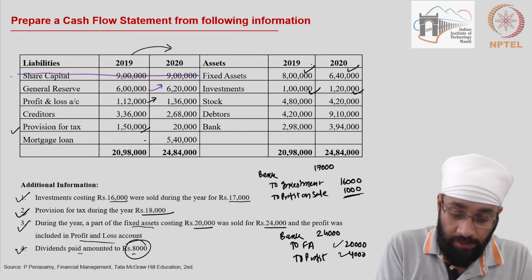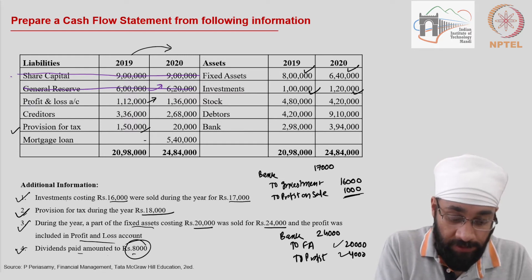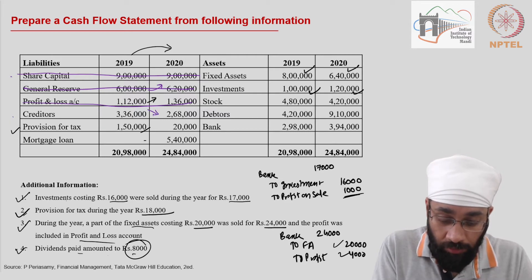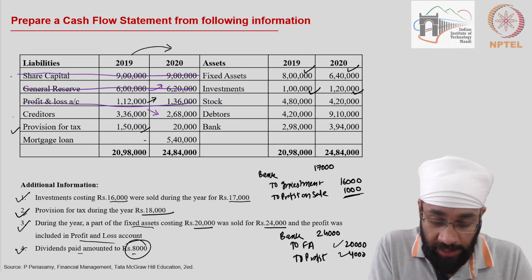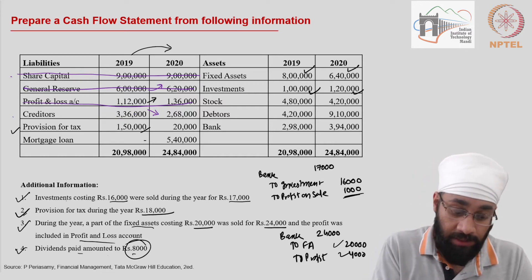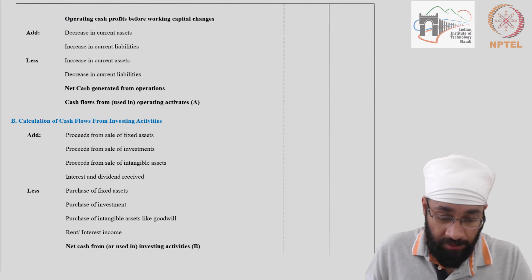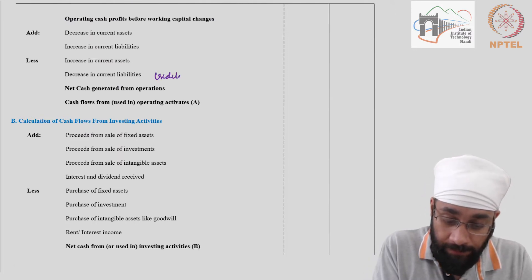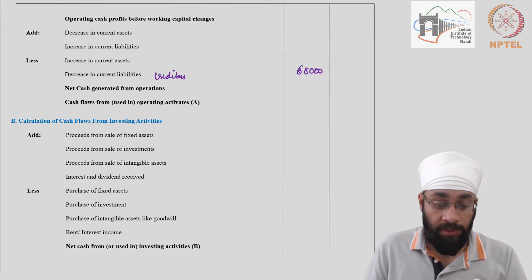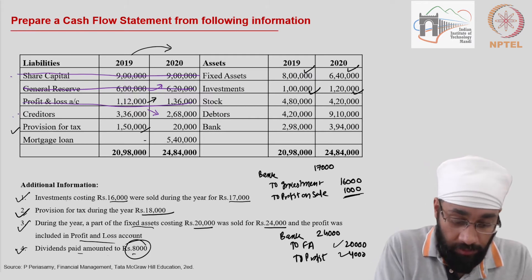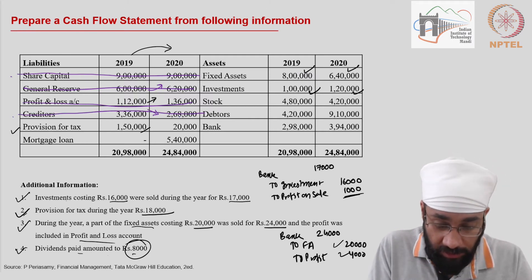Crossing off the items already processed. Creditors are going down during the year — this is a working capital item. The amount comes out to 32,000 plus 36,000, so 68,000 is the decrease in creditors. Cross it off as well. Just double-checking: 32 and 68 makes sense.